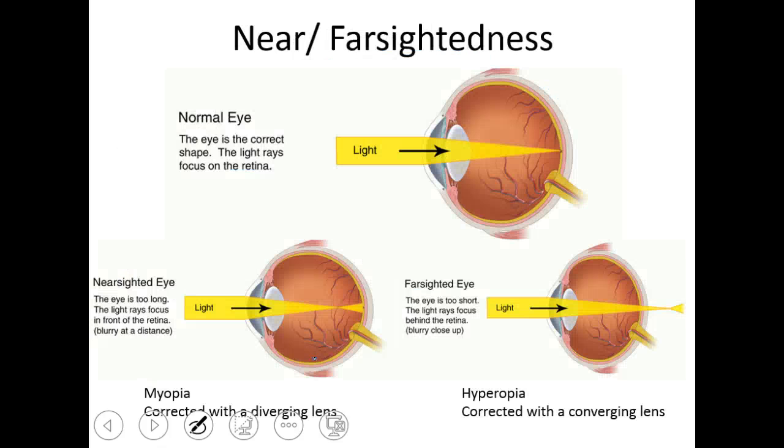We talk about refractive disorders as being nearsightedness or farsightedness. A normal eye and a healthy eye that doesn't need glasses, the eye is perfectly shaped, and the lens is able to contract and expand and accommodate. So you perfectly focus, just like a camera, that real inverted image from the incoming light.